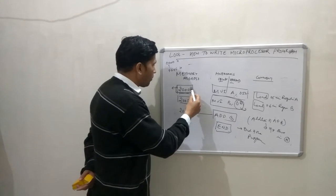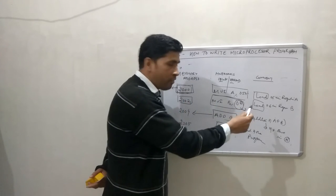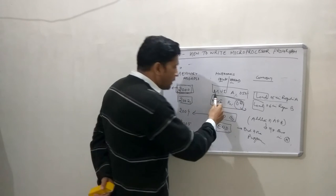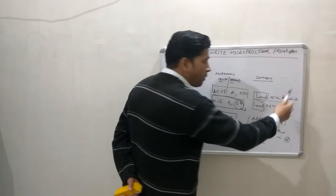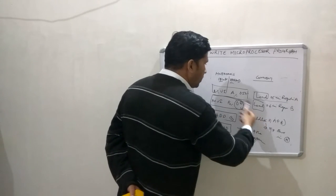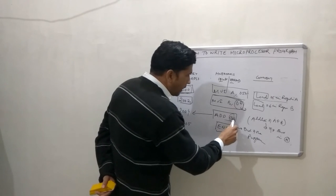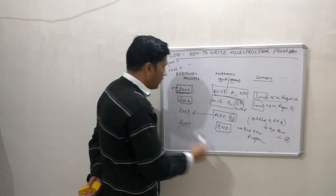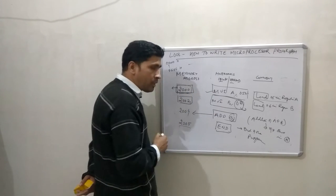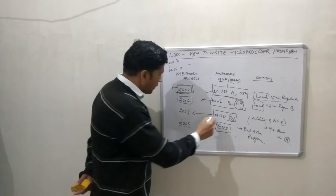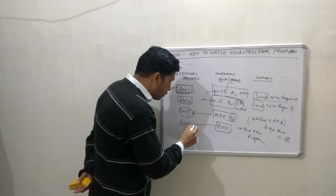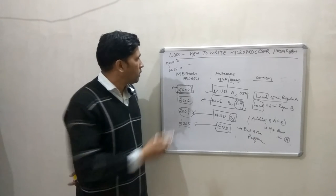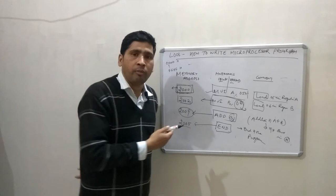In this example I am starting the program from 2000. MVI A, 05 — in the comment you can write: load 05 into register A. MVI B, 0C — load 0C into register B. ADD B means addition of A and B, and the result is stored in A. MVI A and MVI B are two-byte instructions so each takes two memory addresses. ADD B is a one-byte instruction taking only one memory address. HLT is also a single-byte instruction. So this is the basic format to write any microprocessor program, and we must follow this structure.